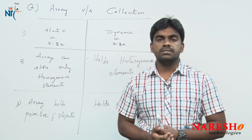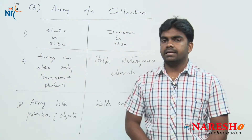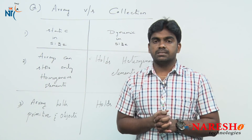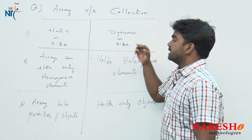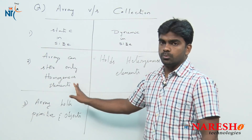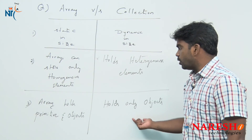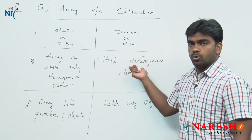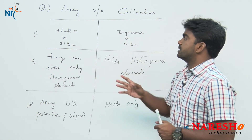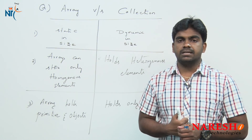So there are many differences between arrays and collections, but these are the main ones. Arrays are static — fixed in size — while collection size increases and decreases automatically depending on insertion and deletion. Arrays hold only homogeneous elements, but can store primitive types and objects. Collections can hold only objects, but those objects can be either homogeneous or heterogeneous — same type or different types. Hope you understood. Thank you all.